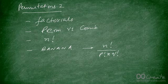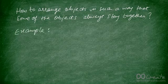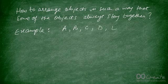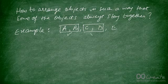Now we'll learn some further concepts about permutations. The next task is to learn how to arrange objects such that some of the objects always stay together. Let's say you have five friends A, B, C, D, and E, and you want to arrange them in a straight line, but A and B always want to stand next to each other, and C and D always want to stand next to each other. How do we handle that case?